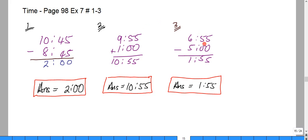So we have 6:55 and we're going to take 5 hours from that. We say 0 from 5 would give us 5 here, 5 there, and 5 from 6 would give us 1. So our answer would be 1 hour and 55 minutes.